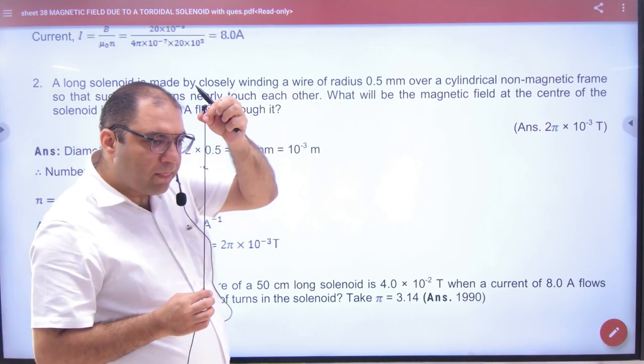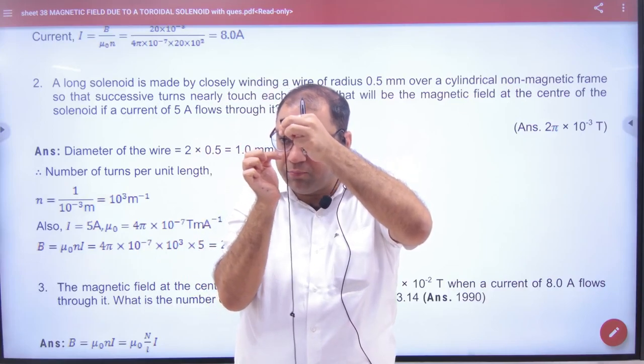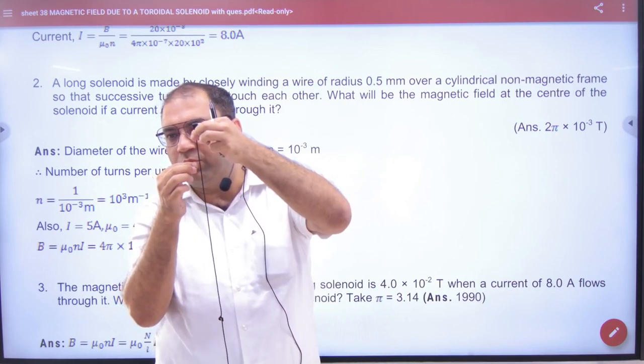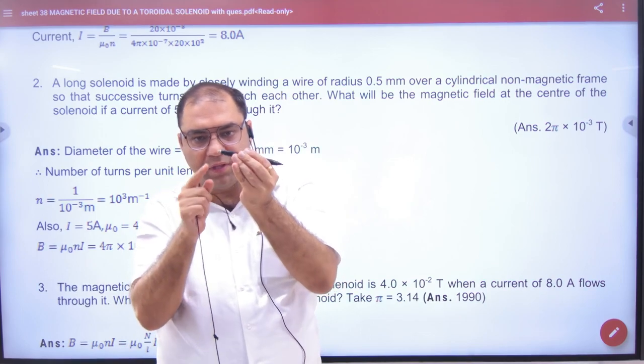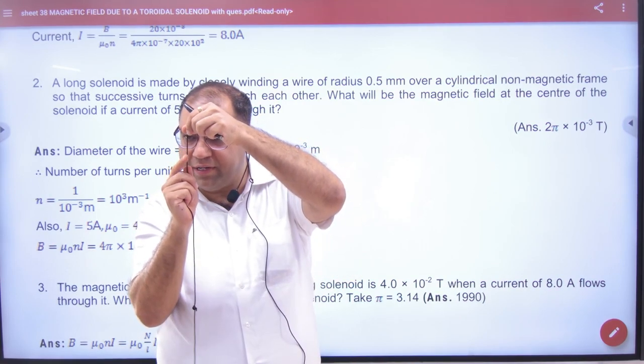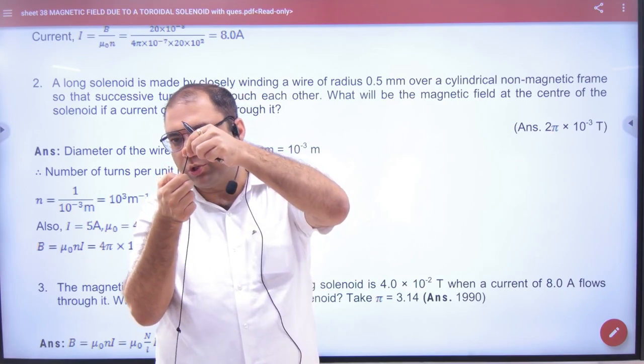This wire's cross section radius is 0.5 mm, so what is the diameter? 0.5 mm times 2, so this diameter will become the wire diameter - 0.5 mm times 2. Clear?